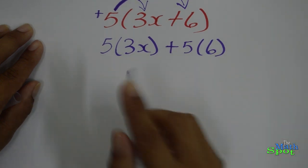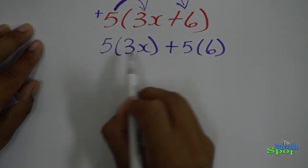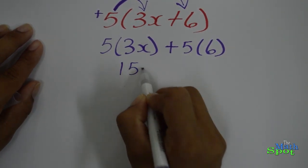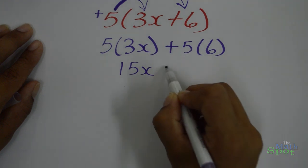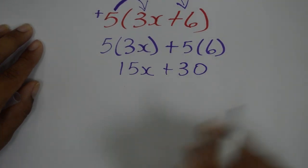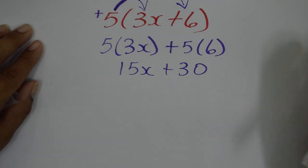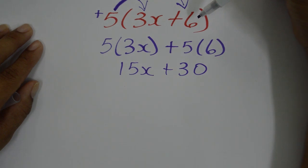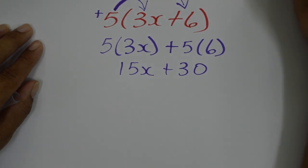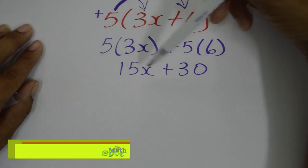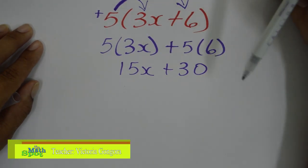Continuing to expand: 5 times 3x gives 15x, and 5 times 6 gives 30. And that's it. So 5 times 3x plus 6, in expanded form, gives us 15x plus 30.